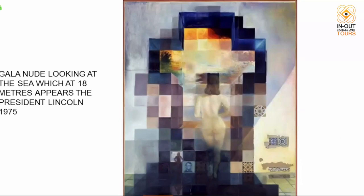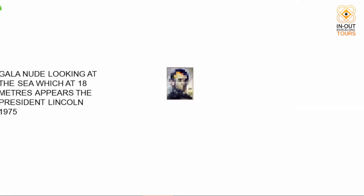Another famous painting is 'Gala Nude Looking at the Sea, Which at 18 Meters Appears the President Lincoln.' The title is a spoiler: you see Gala naked from behind on a balcony looking at the sea. But if you stand up and walk 18 meters away and look at the same painting, you see a hyper-pixelated portrait of President Lincoln — an optical double-image effect that demonstrates how genius Dalí was.